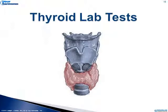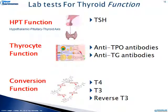Now we'll turn our attention to thyroid lab tests and what they specifically tell us about thyroid function. These are lab tests classically used for thyroid function. The first is TSH — thyroid stimulating hormone — which tells us about HPT axis function: is the hypothalamic-pituitary-thyroid axis doing what it's supposed to do as far as giving instruction?